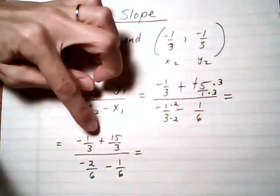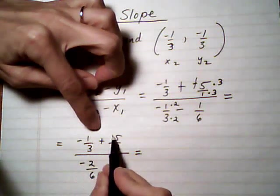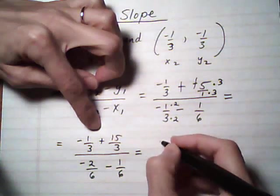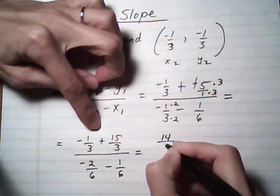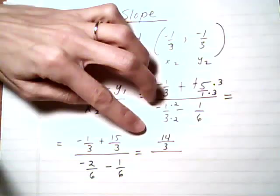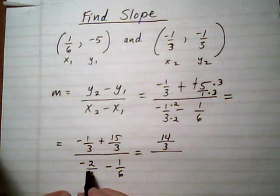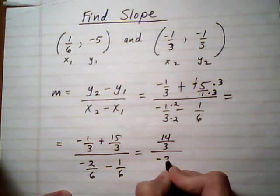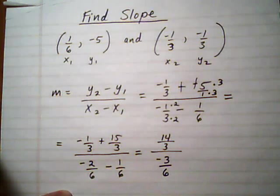And then we keep going. So the top, we're going to go ahead and add. So we get minus 1 plus 15, which is 14, over the common denominator of 3. And the bottom one, minus 2, take away 1, which would be minus 3, over the common denominator of 6.